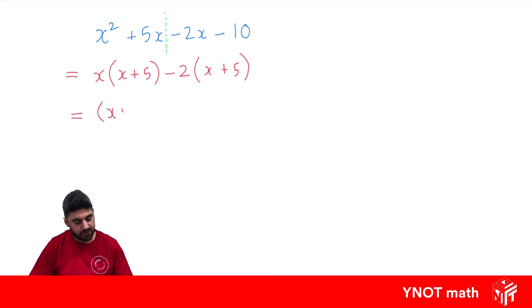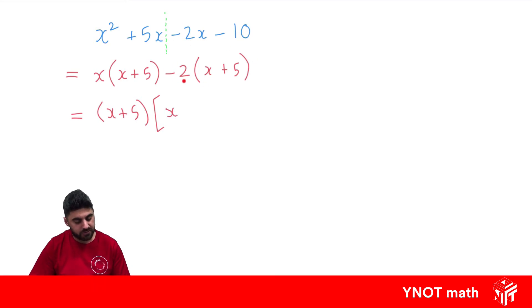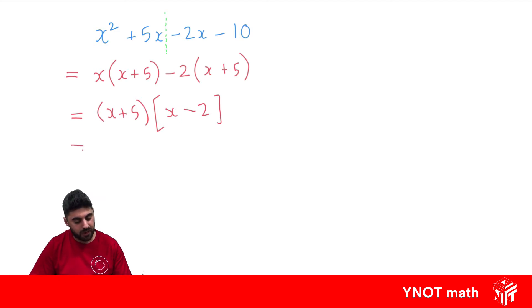We pull out x plus 5 from the first term and we're just left with x. Then pulling x plus 5 out of the second term, we're just left with minus 2. And now we've factorized that by the method of grouping in pairs. Just tidy it up by giving the other factor a rounded bracket.